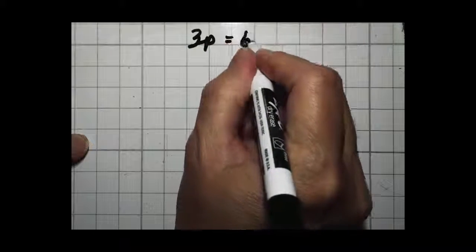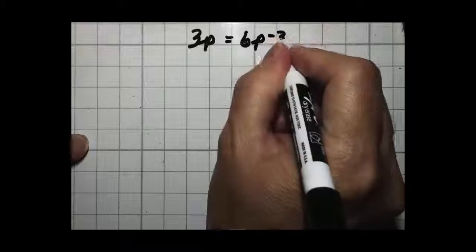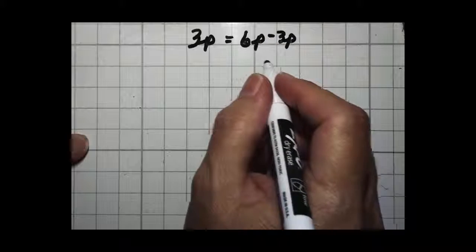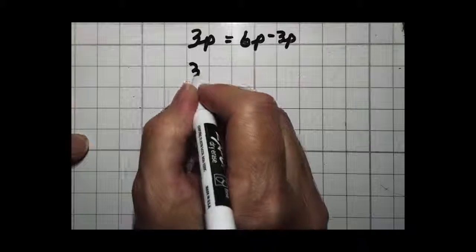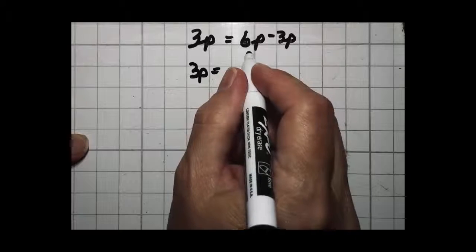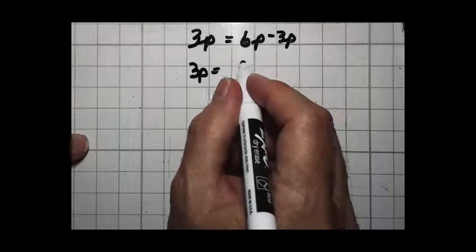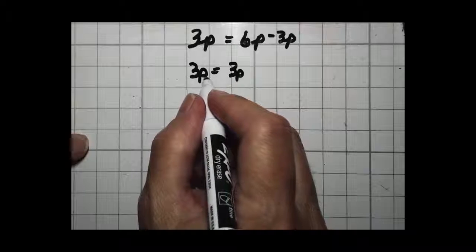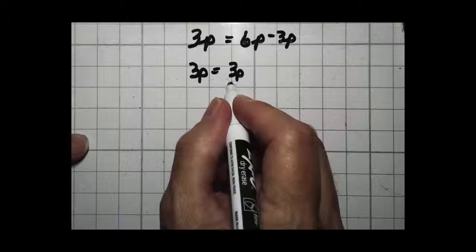3p equals 6p minus 3p. Well, as you know, when we solve equations, we always want to combine like terms first. So we're going to leave this side alone. We're going to take 6p minus 3p. 6 minus 3 is 3. Now, if you'll notice, you end up with 3p equals 3p.